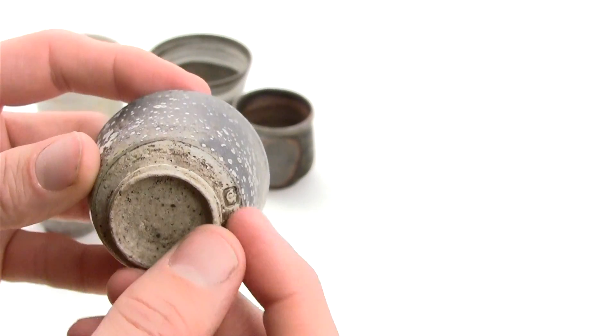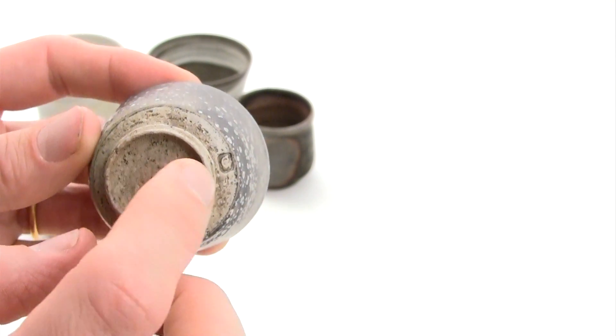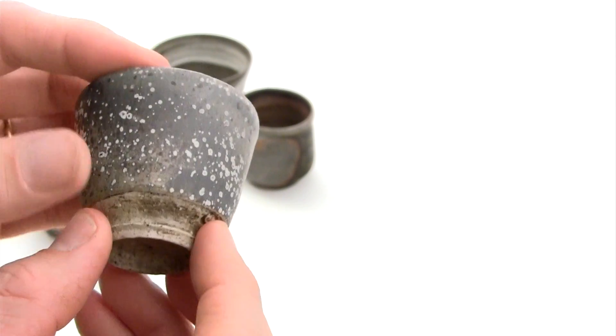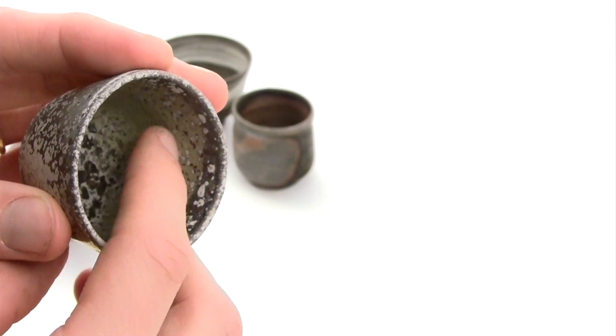You can see it's been reduction cool because there's no tendency towards white or yellow here. It's just grey. The entire shape is grey with a little bit of tint of green here and there, especially on the inside.